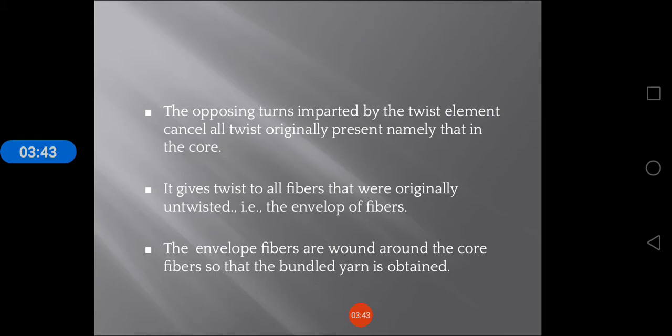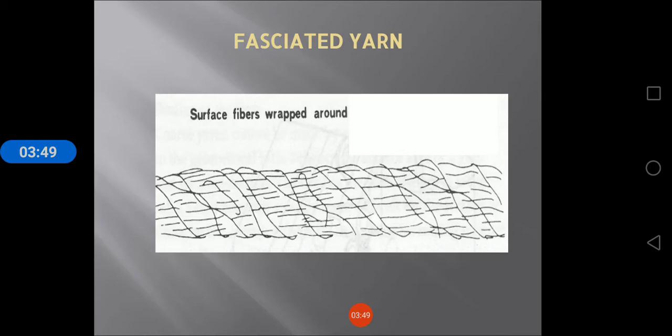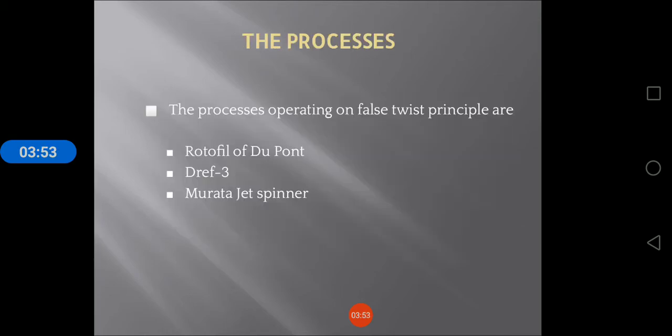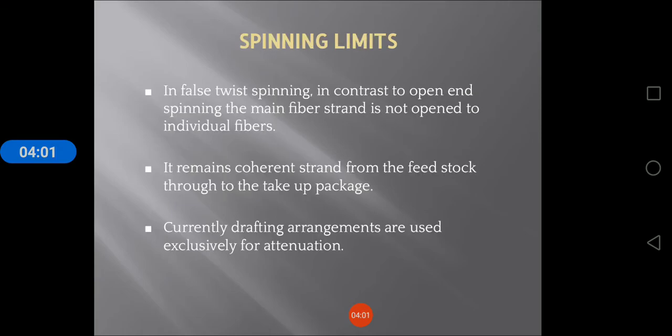The envelope fibers are wound around the core fibers so that a bundle yarn is obtained. Fasciated yarn surface fibers are wrapped around. This process operating on false twist principles includes Rotofil, Dref, and Murata Jet Spinners.